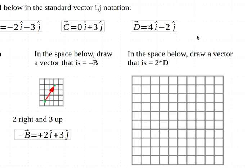Now we get to the third question on our worksheet. In the space below, draw a vector that is equal to 2 times D. And here's our D vector up here.